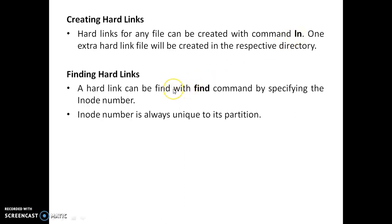To find hard links in your system — to find how many hard links or file mappings exist — you can use the find command. The find command shows how many files a particular inode number is mapped to. Remember: one inode number can be mapped to many files, but one single file can be mapped to only one particular inode number.